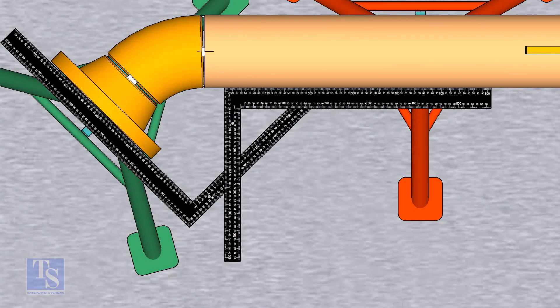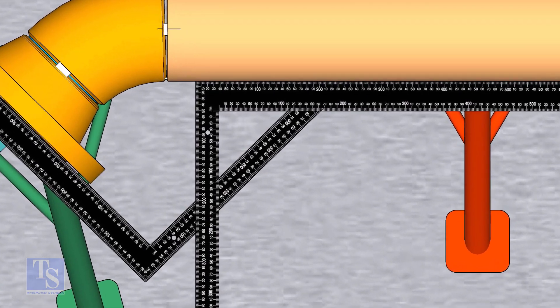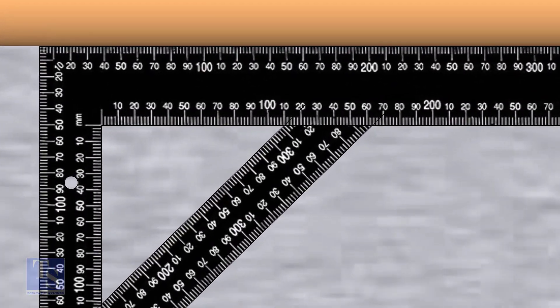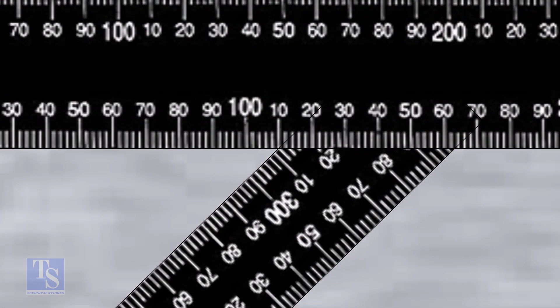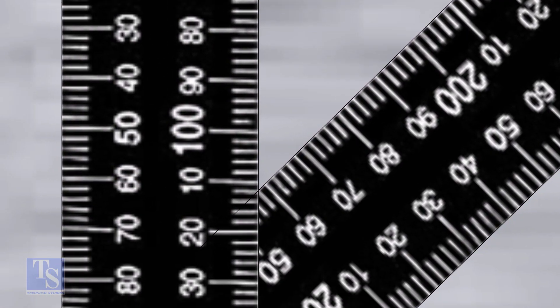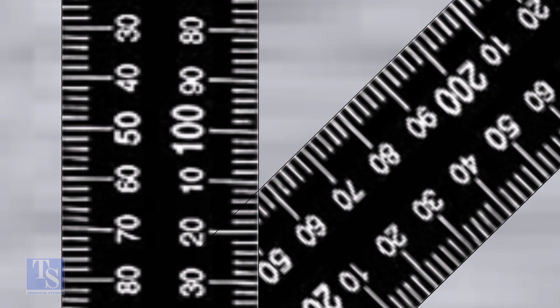Check the degree of the flange face to the pipe. Tack weld on both sides of the joint.